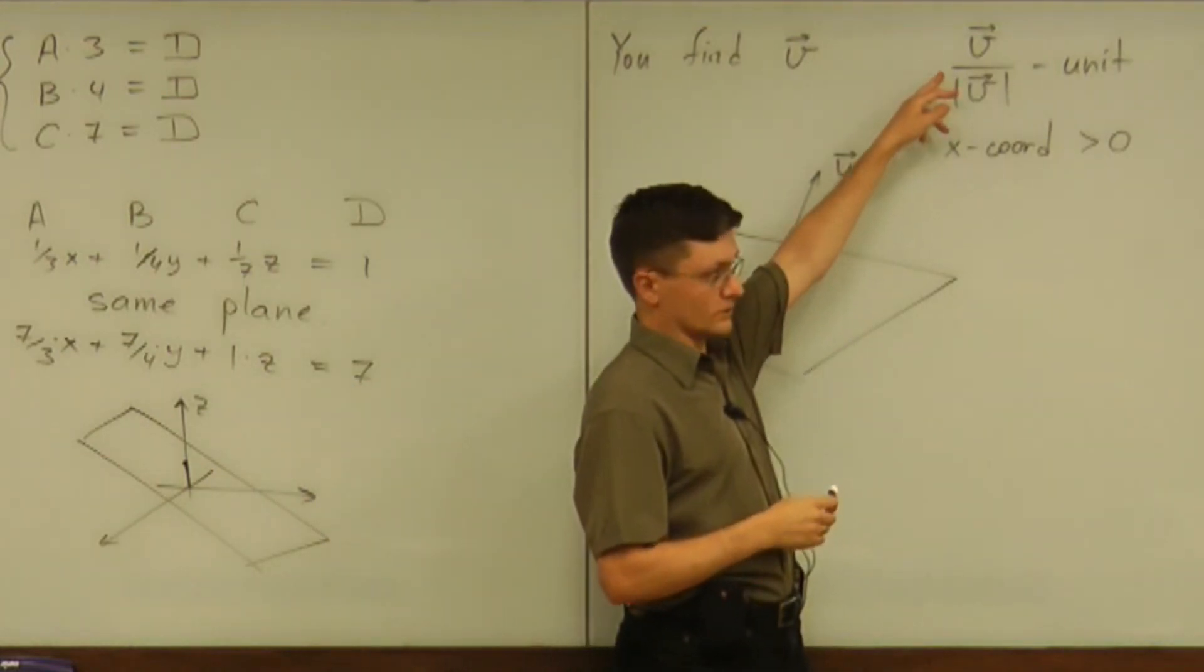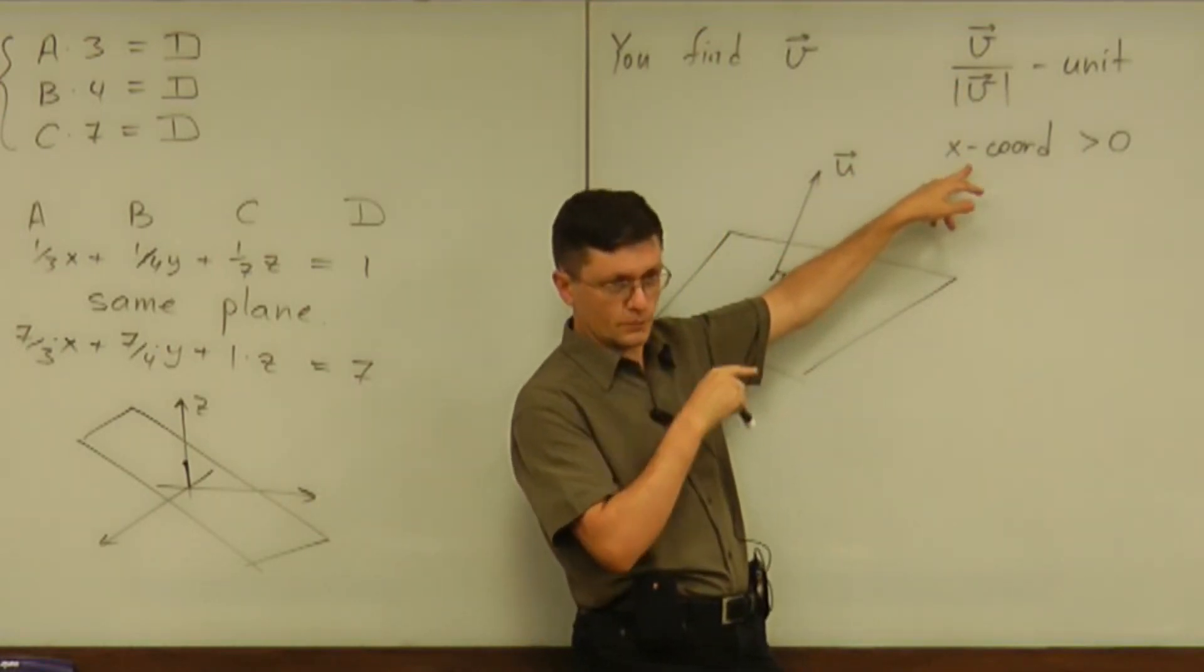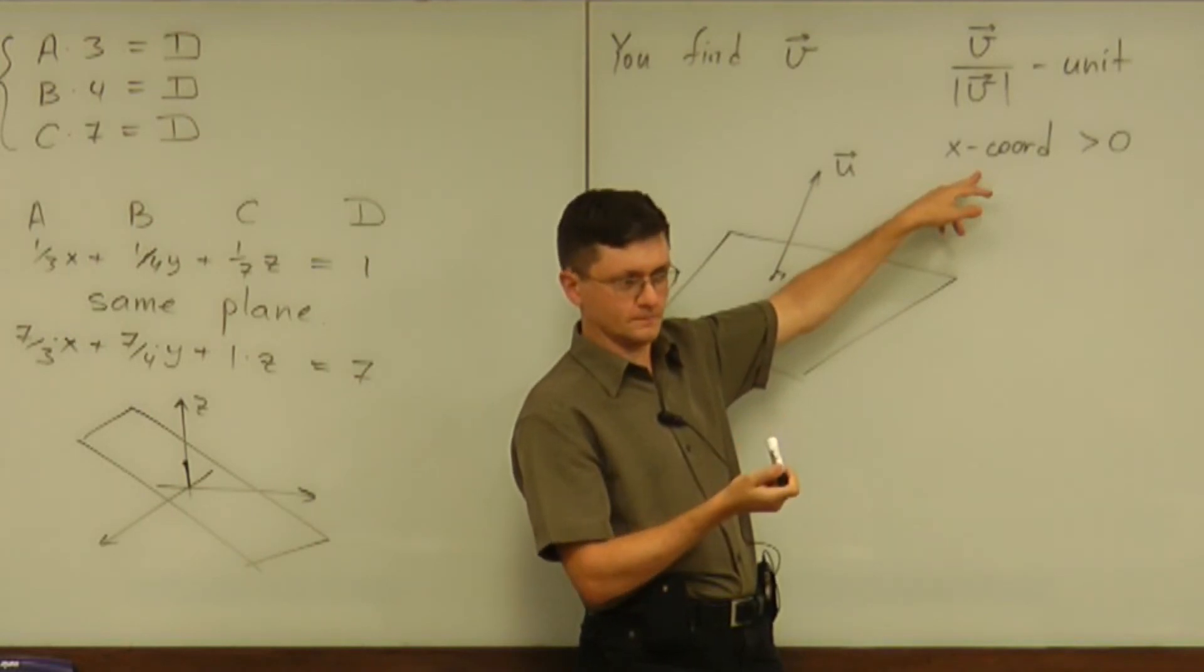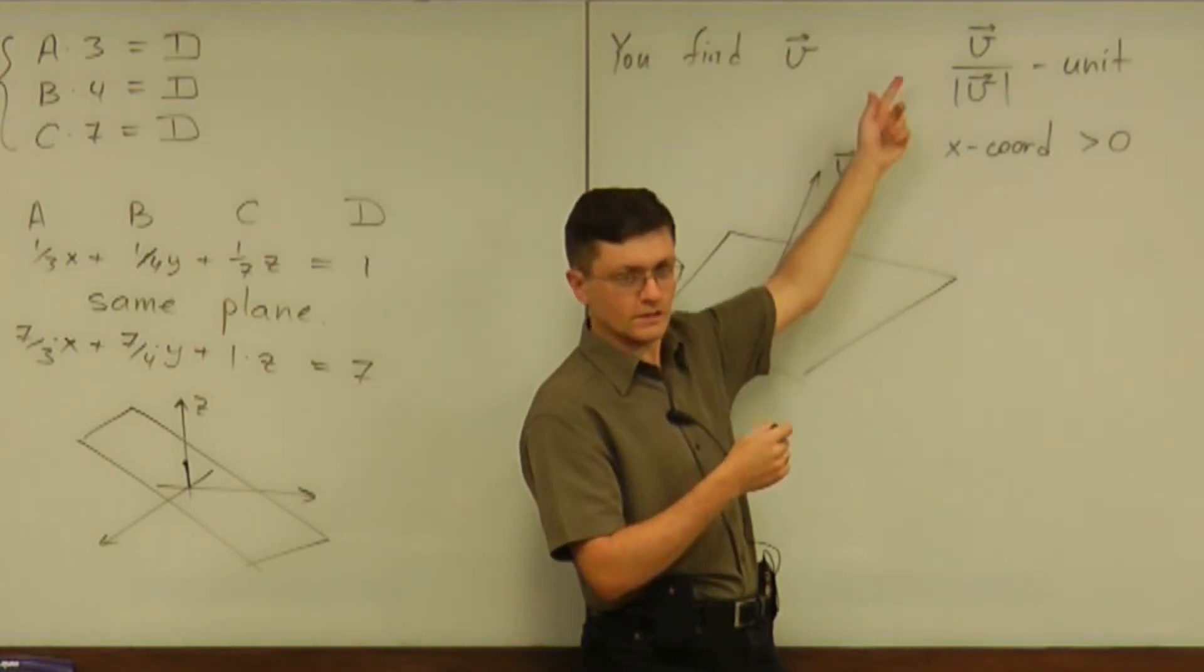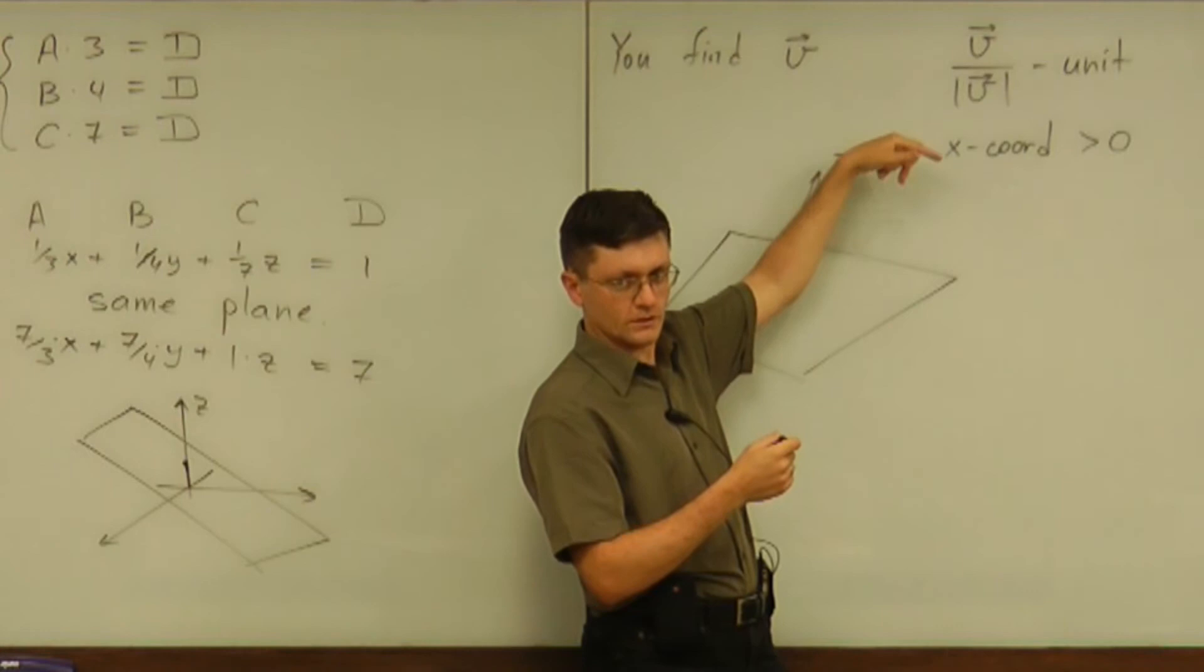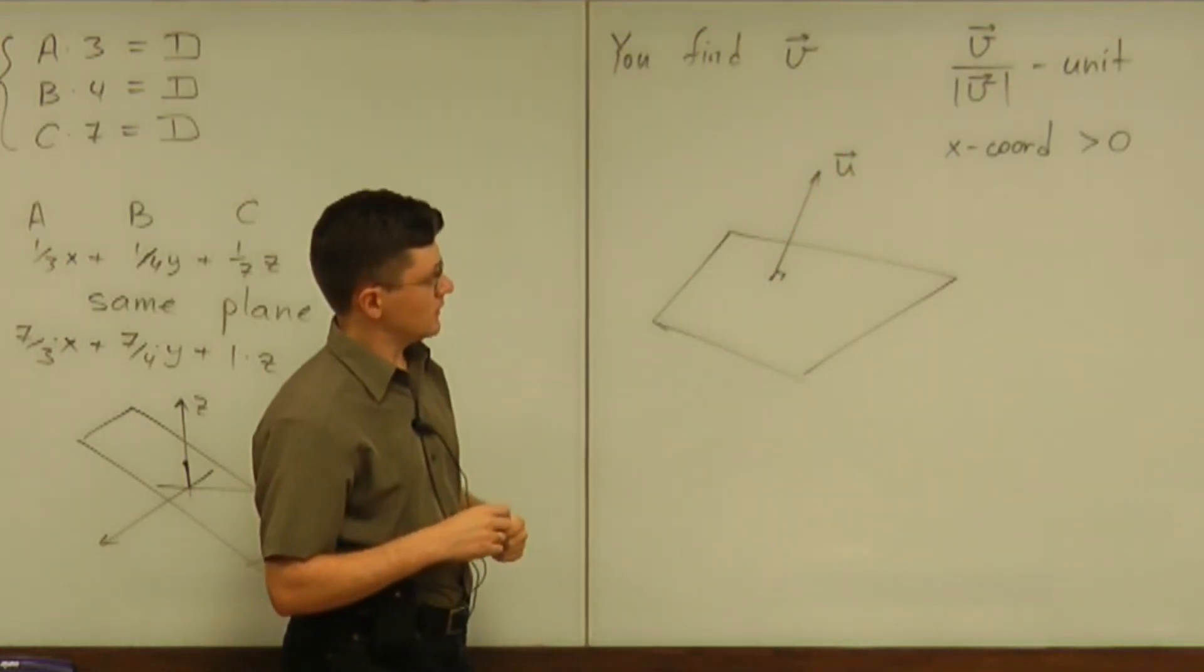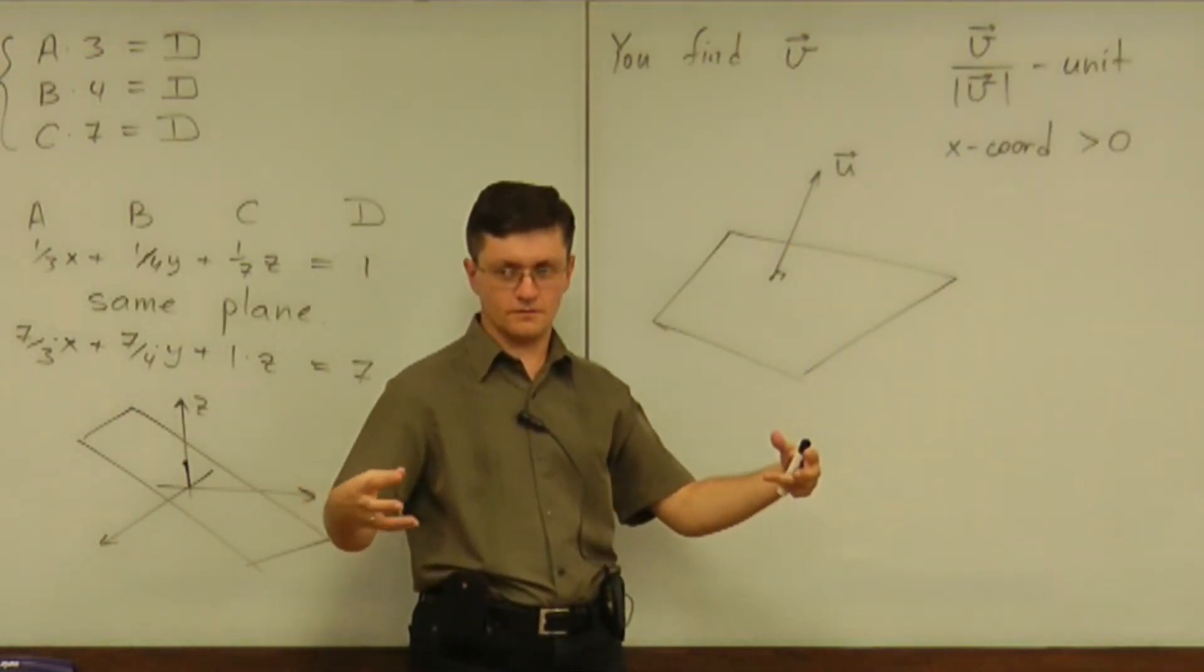But you basically look at your unit vector and you look at x-coordinate of that vector. If it is positive, submit. If it is negative, what do you do? Just negate everything. Take negative of whatever vector you got to get the right one. Because I think I'm asking for all three coordinates of the vector.